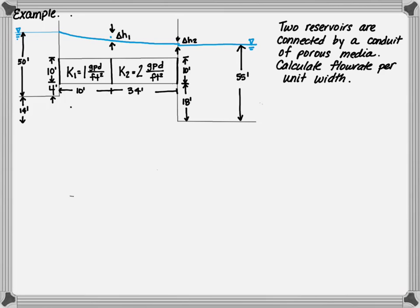The hydraulic conductivity constant in area one is 1 gallon per day per foot squared, and the conductivity in area two is 2 gallons per day. The distance of porous media one is 10 feet, and porous media two is 34 feet. Based on this information, let's determine the flow rate.